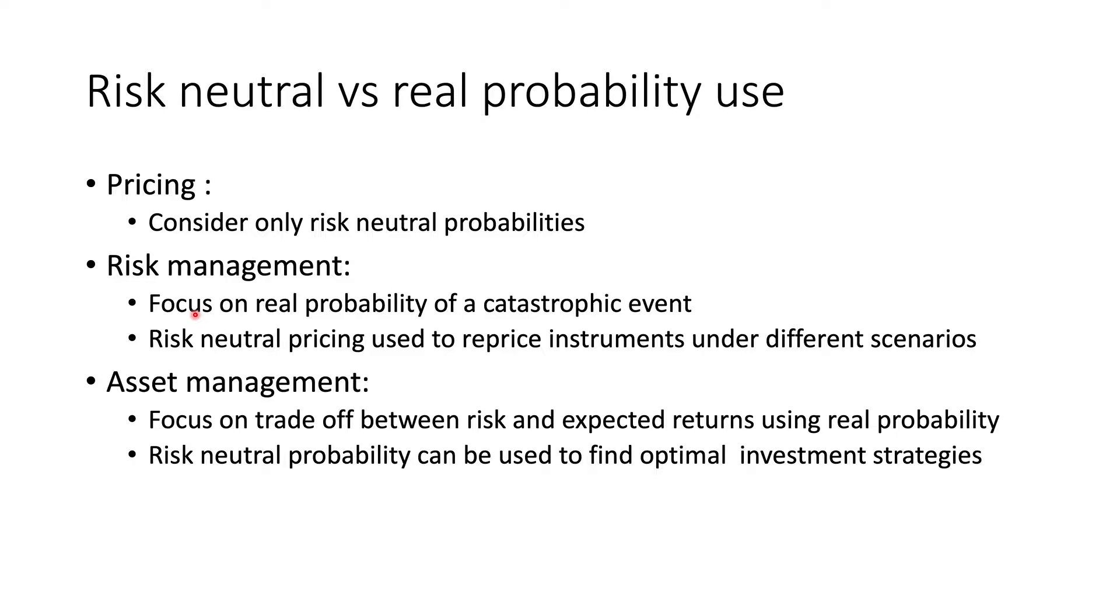However, we can think about how risk neutral pricing comes in because in risk management, you might need to do some scenario analysis, right? What if interest rate goes up? How will that impact my portfolio? So you have different scenarios that you will need to reprice the price of your assets under those scenarios. And that is where risk neutral probability can still come in, in risk management. And for asset management, the focus is on a trade-off between risk and expected return using real probabilities again. And here, risk neutral probability can be used to find optimal investment strategies. And I will show you how that can be done in this section as well.